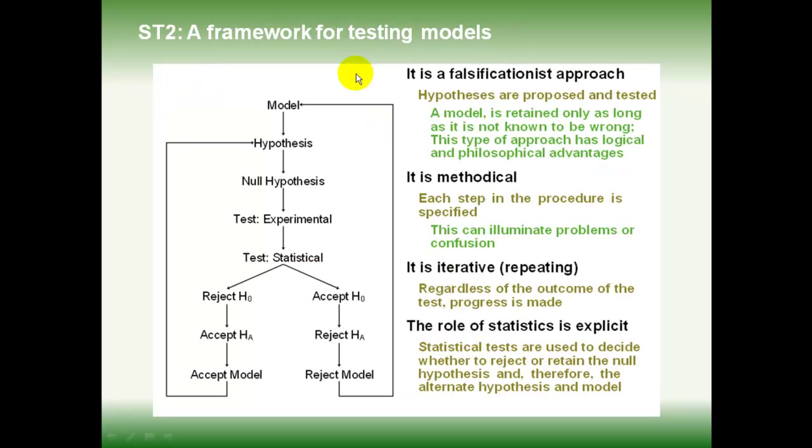In subtopic two, we look at a framework for testing models. That's a series of steps which are in the diagram here on the left. We start with our idea, explanation or model, and then we move through a series of steps in order to test that model. Characteristics of this is that it's a falsificationist approach, which basically means that we're proposing hypotheses and trying to test them. It's a methodical approach, which you can see by the diagram. We work step by step, and that can help us identify problems.